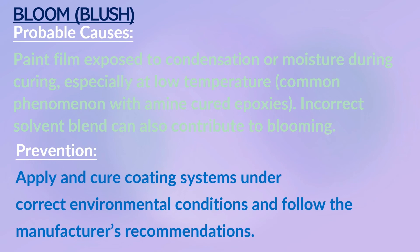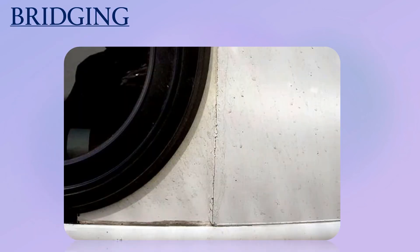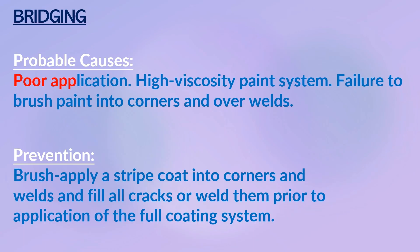Bridging: the covering over of unfilled gaps such as cracks or corners with a film of coating material. This introduces a weakness in the paint film which may crack or flake off. Probable causes: poor application, high viscosity paint systems, failure to brush paint into corners and over welds. Prevention: brush-apply a stripe coat into corners and welds, and fill all cracks and welds prior to application of a full coating system.